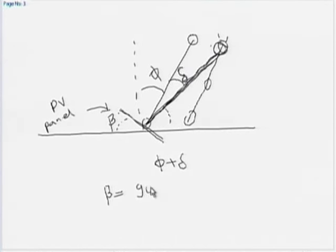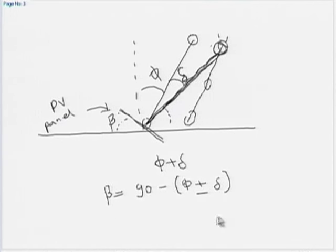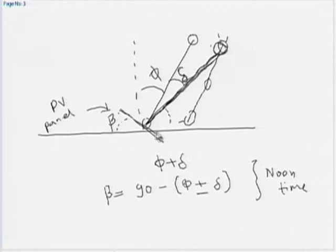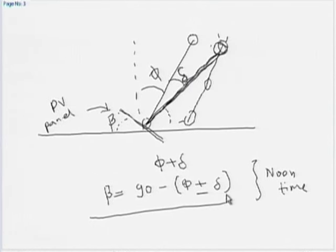Beta equals 90 minus the angle, which gives β = φ ± δ, since delta can be plus or minus. So beta is the tilt of the solar collector — whether it is solar photovoltaic or solar thermal — and remember this equation is true for the noon time, the peak position of the sun. In the morning the angle is different, in the afternoon it is different, but I am talking about noon time. So β = 90° − (φ ± δ), where φ is the latitude angle and δ is the declination angle.